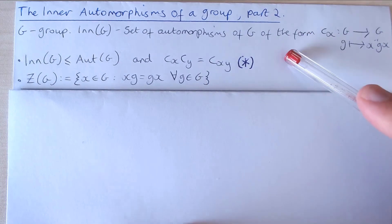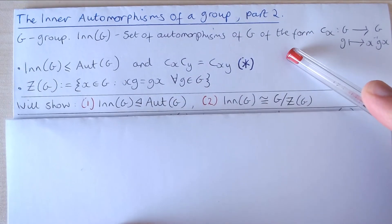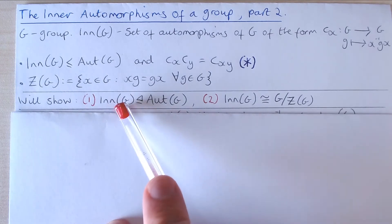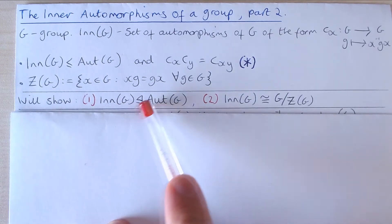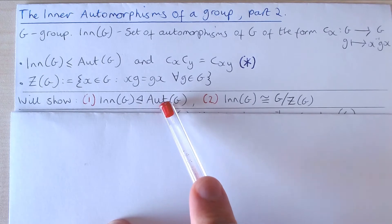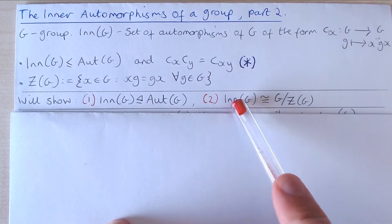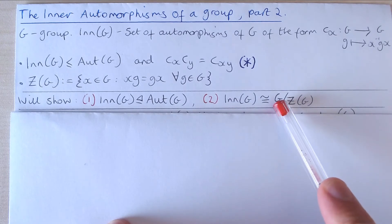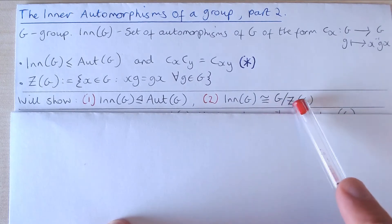In this video, we will show the following: one, that the inner automorphisms of G is actually a normal subgroup of the automorphism group of G; and two, that the inner automorphism group of G is isomorphic to the quotient of the group G by its centre.